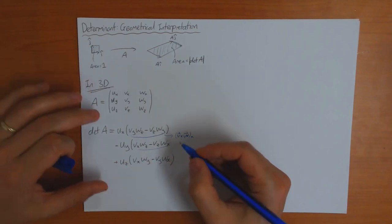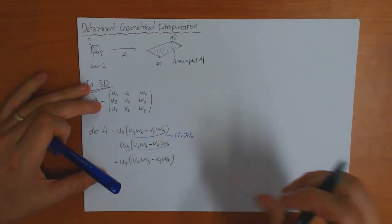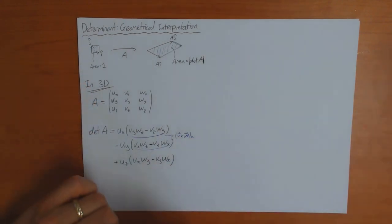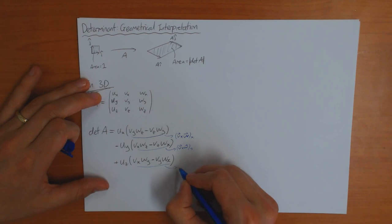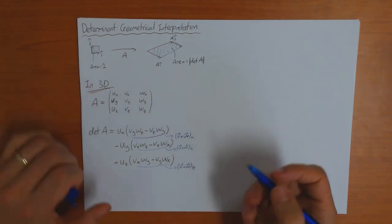And the same is true. This one is the Y component of the vector product. And this one is the Z component of the vector product.